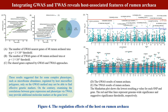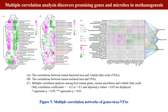To further investigate the host-associated features of rumen archaea, a total of 1,703 significant associated genes were identified using the TWAS approach. These rumen archaea-associated host genes provide a new opportunity to resolve methane emissions from the perspective of host-microbe interactions. In addition, we wanted to discover promising genes and microbes in methanogenesis, so we established a comprehensive relationship network among host rumen genes, rumen microbiota, and rumen volatile fatty acids with methanogenic archaea.